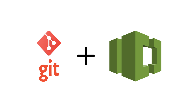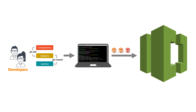Hello and welcome back to another lecture. In this lecture, we will learn how to set up a Git client to work with CodeCommit. The Git client will allow you to work on any file on your local computer, and once you are done working on that file, you can push the changes to your CodeCommit repository in AWS.